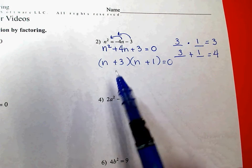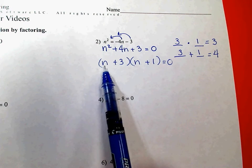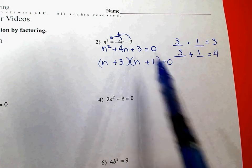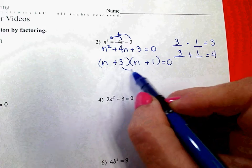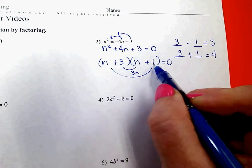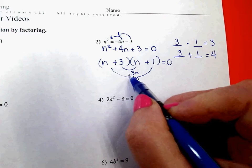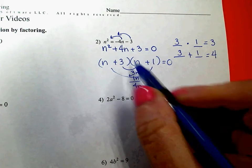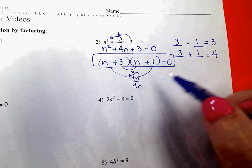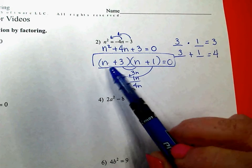So again, quick check to make sure you didn't get off track. n times n is n squared. 3 times 1 is 3. The 4n comes from this combination. 3 times n plus 1 times n, which adds up to 4n. So I know that this is correct, and I'm ready to get my solutions for the two n's that I have.